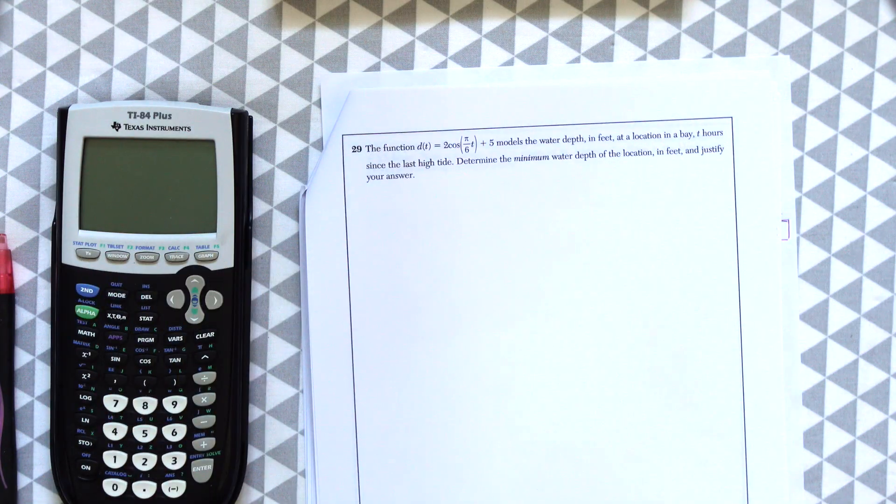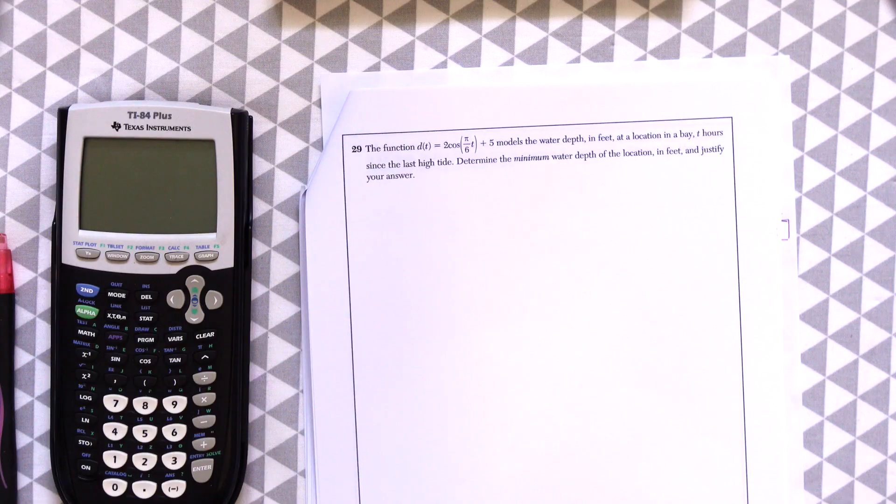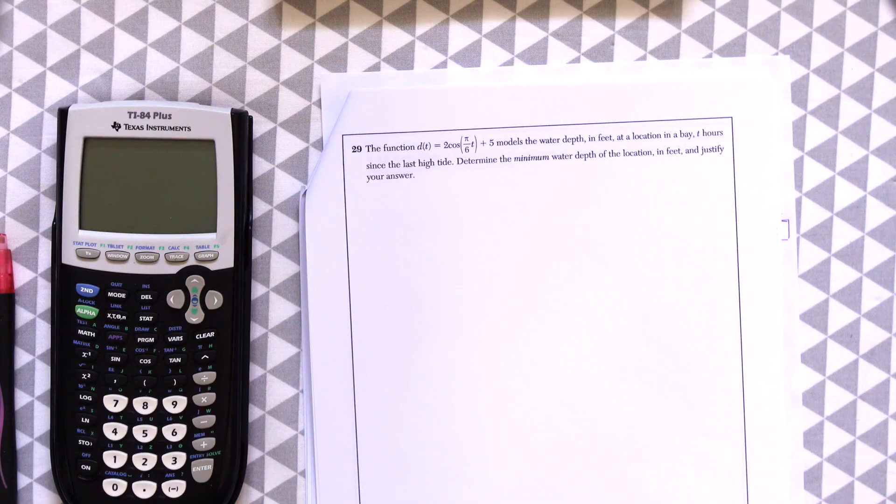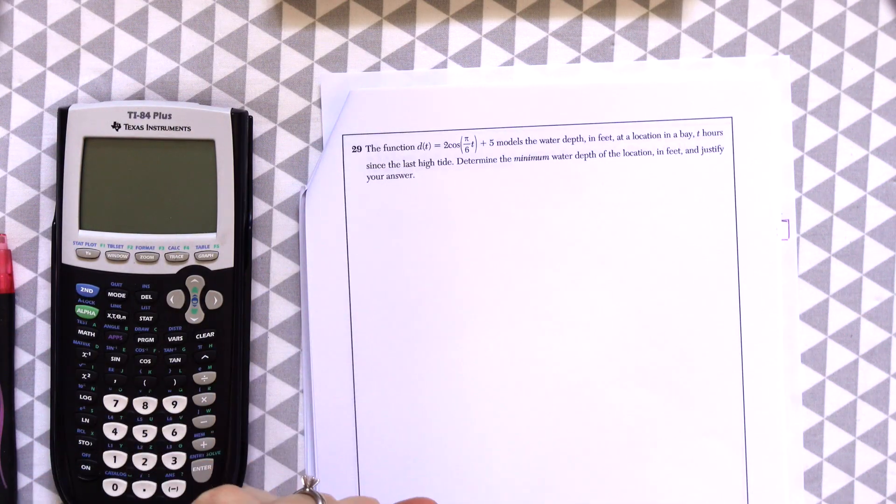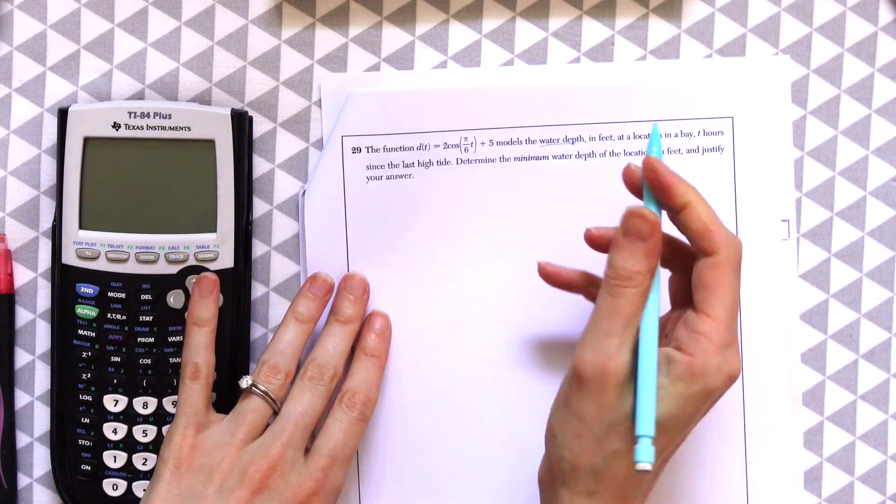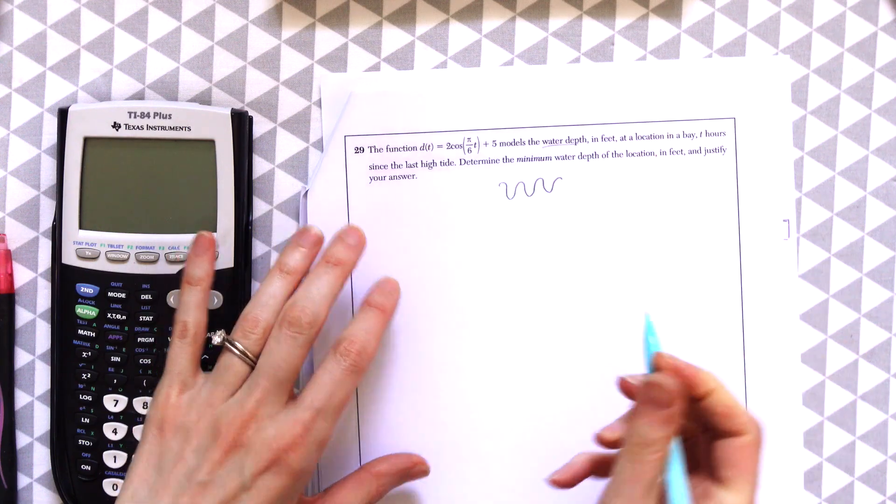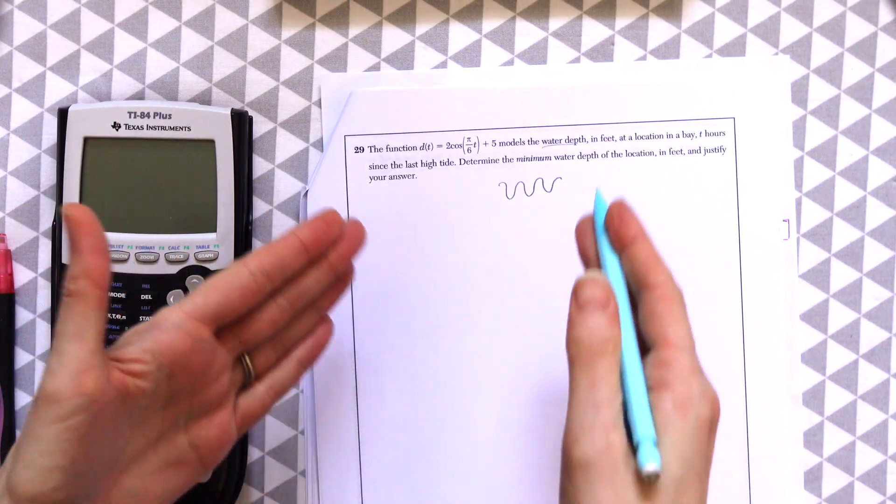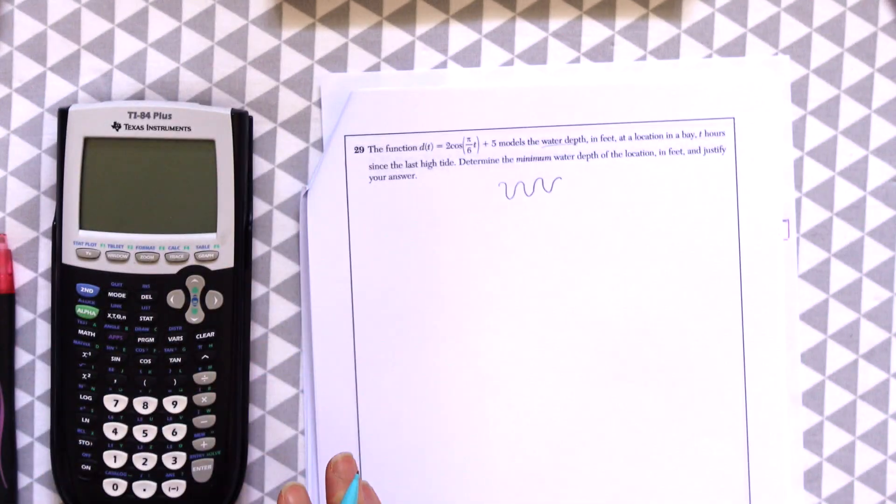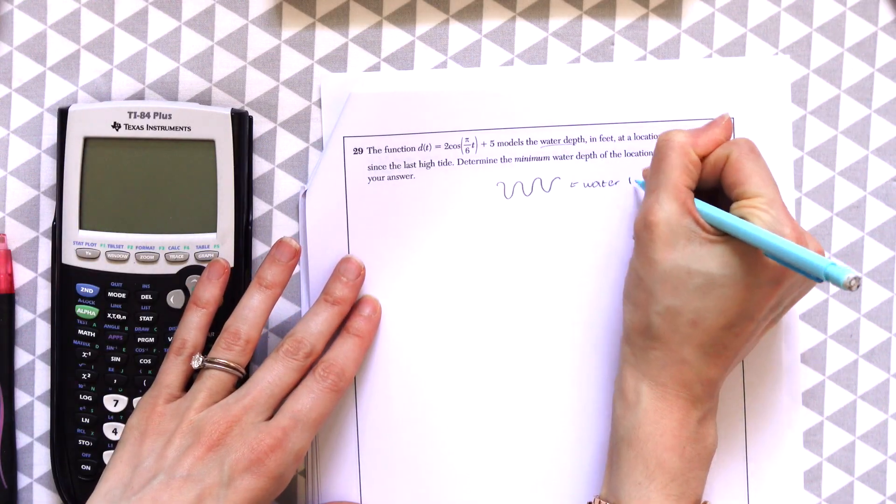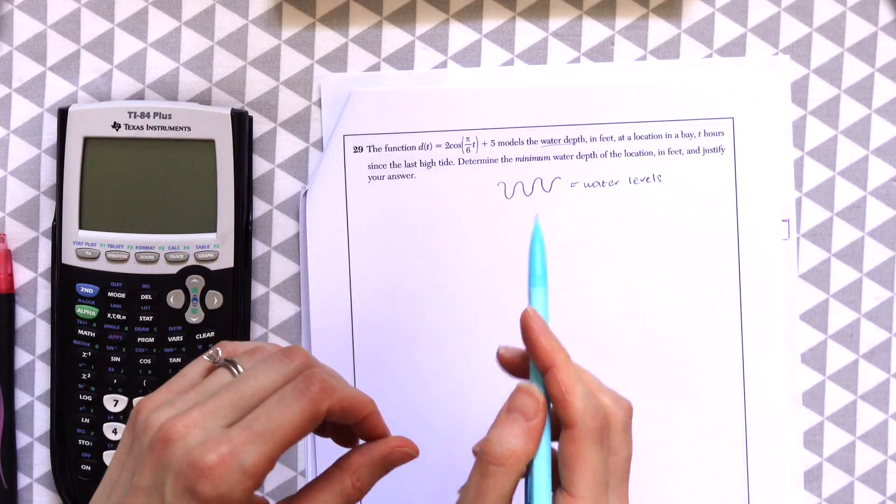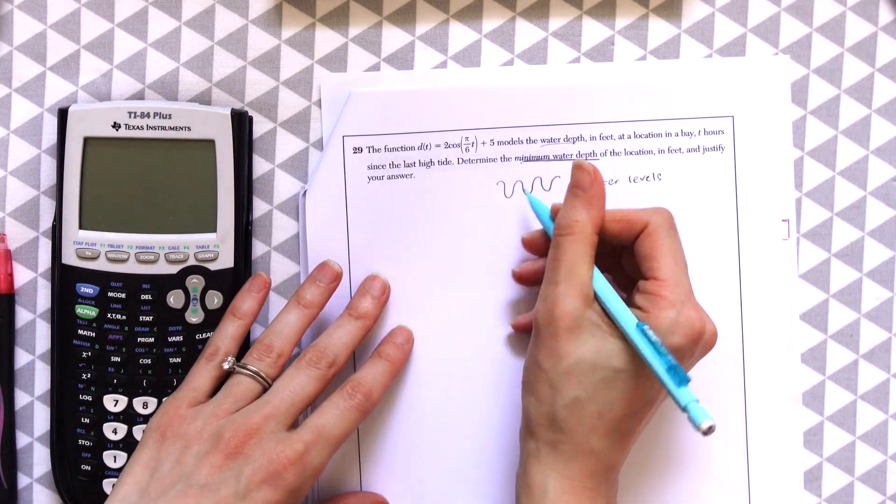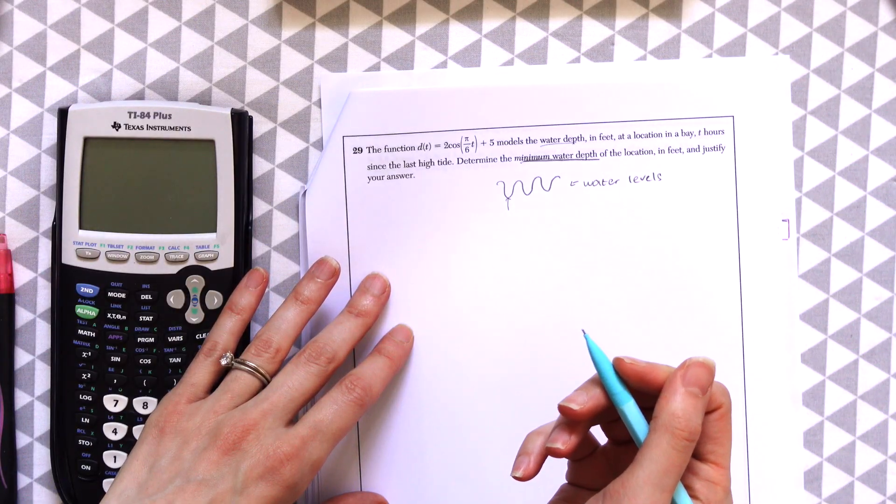Question 29. The function d of t equals 2 cosine of pi over 6 times t plus 5 models the water depth in feet at a location in a bay t hours since the last high tide. Determine the minimum water depth of the location in feet and justify your answer. Let's get into this equation. This equation represents water depth. When you think about a cosine function, it looks something like this. So the water depth can be represented by a cosine equation, meaning like the tide goes in and out, and the water levels keep rising and lowering. So we're looking for the lowest point. That's the minimum of our graph.